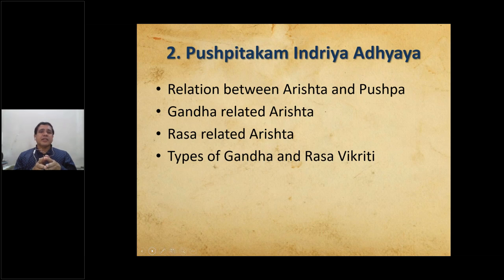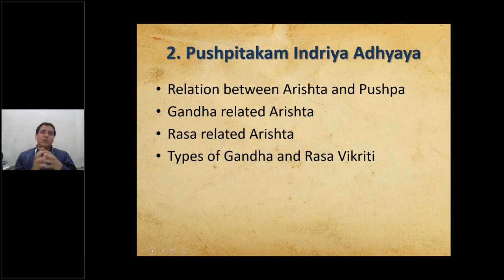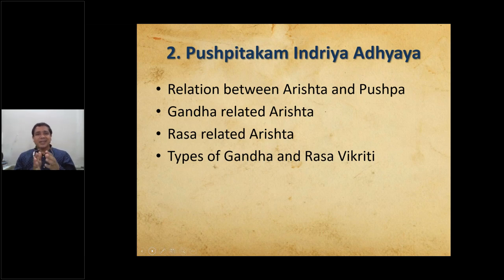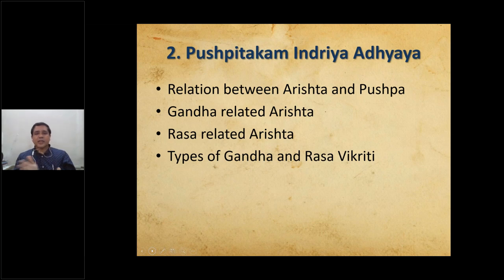The second chapter is Pushpi Chakam Indriyam Adhyaya. In this chapter, the relation between Arishta and Pushpa (flowers) is described. We especially smell flowers — that is the Gandha Pariksha. Gandha (smell) related Arishtas are explained here, as well as Rasa (taste) related Arishtas. Types of Gandha and Rasa Vikriti are also elaborated.